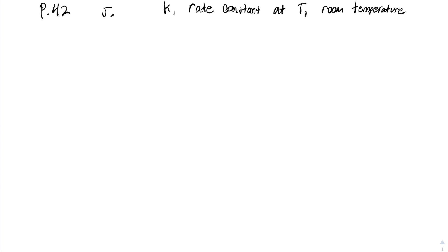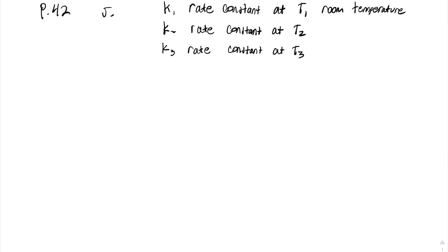You did two different warm water baths. The rate constant at t2 was about 15 or so degrees above room temperature. And k3 was about 20 or 30 degrees above room temperature. So you have three different rate constants. Remember, the reaction rate is faster at higher temperature because the rate constant is faster at higher temperature.